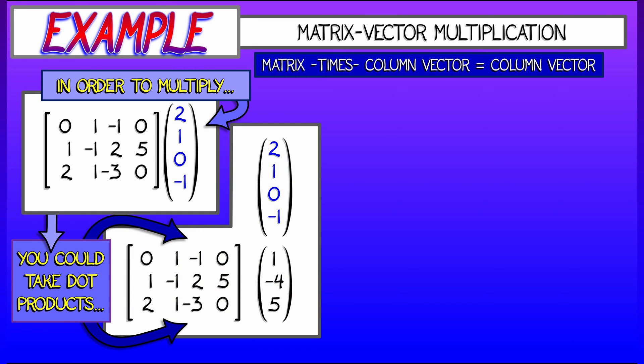In this case, you could do exactly as we have said and take dot products of the rows of the matrix with that column vector, and you can check that you will get the answer, in this case, of 1, negative 4, 5.